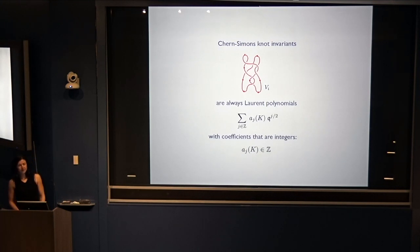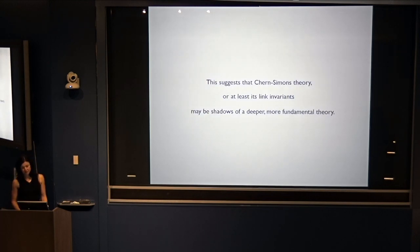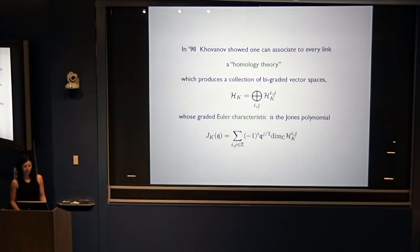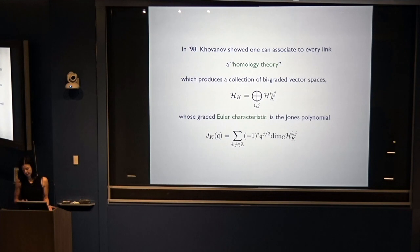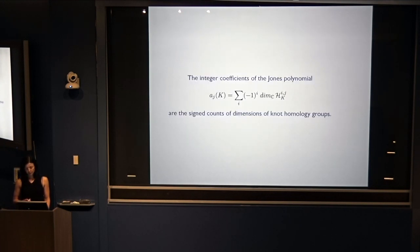Chern-Simons knot invariants turn out to always be Laurent polynomials with integer coefficients. This suggests that Chern-Simons theory, or at least its knot invariants, may be shadows of a deeper, more fundamental theory. In 1999, Khovanov showed that one can associate to every link a homology theory which produces a collection of bigraded vector spaces whose Euler characteristic is the Jones polynomial. The integer coefficients of the Jones polynomial are signed counts of dimensions of the homology groups.